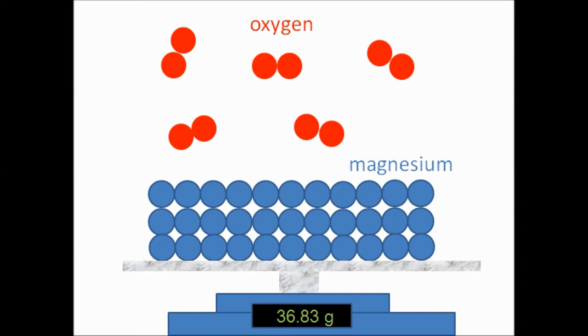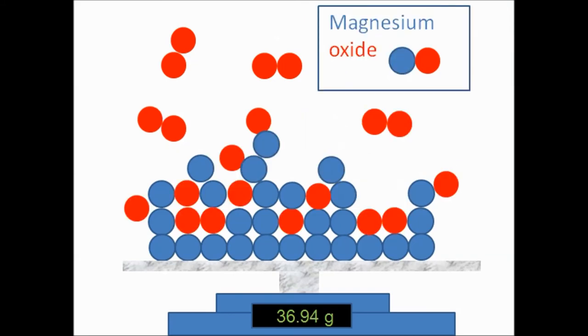So why did the mass increase? When we weighed the magnesium the first time round, we were weighing only magnesium atoms because the oxygen was floating around in the air. So look what happened to some of the oxygen atoms. They've broken free from their pair and they've bonded with the magnesium atoms. So we can now weigh the oxygen as well, because it's become part of the solid. So oxygen does have a mass, and that's why it got heavier.